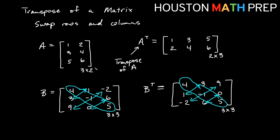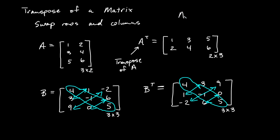One more note: if I take the transpose of a matrix and then take the transpose again, 1, 3, 5 goes back to being a column and 2, 4, 6 goes back to being a column. So if you take the transpose of a transpose, you get back the original matrix that you started with. Hopefully that's pretty obvious.